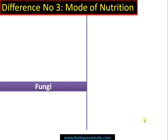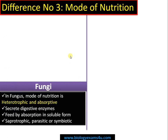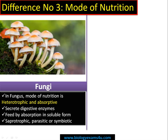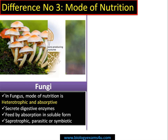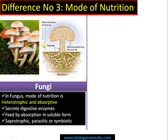Difference number three regards mode of nutrition. In fungi, the mode of nutrition is heterotrophic and absorptive. The fungus grows on the substratum, secretes digestive enzymes, and feeds by absorption. This is a microscopic view showing a fruiting body and the hyphae moving around on the substratum, secreting enzymes and absorbing nutrients.